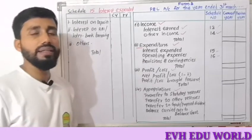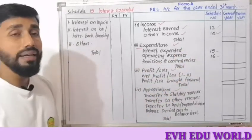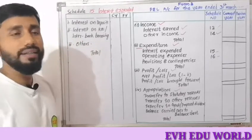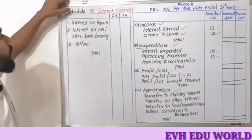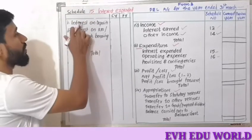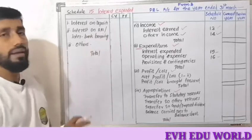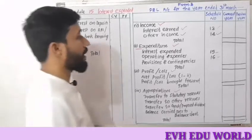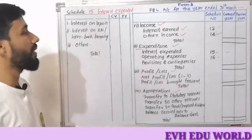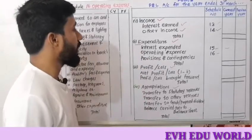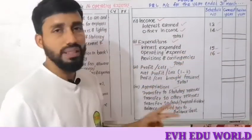Under the Expenditure head, the bank's most important expense is interest. For Schedule 15 — Interest Expended — we include interest on deposits, interest on RBI borrowings, and interbank borrowings, arriving at the total interest expended. The next item is Operating Expenses under Schedule 16. So the four schedules for the Profit and Loss Account are Schedules 13, 14, 15, and 16.